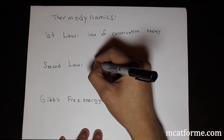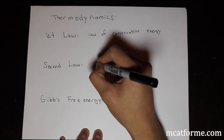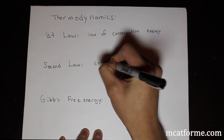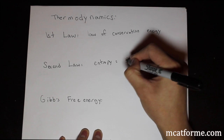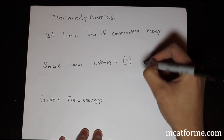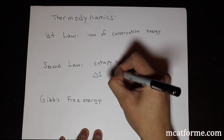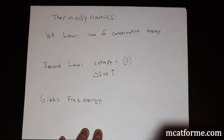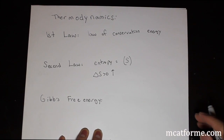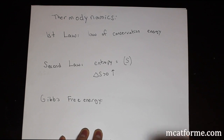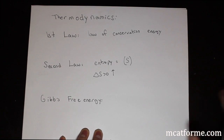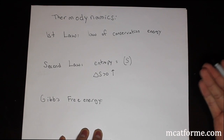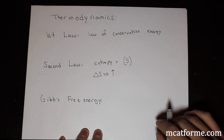The second law is that disorder always increases — this is called entropy, denoted by S. The change in entropy is always increasing, so it's always greater than zero. You can think of it like your room always getting messier. The MCAT really never tests on exactly what entropy is — just know that it's disorder.